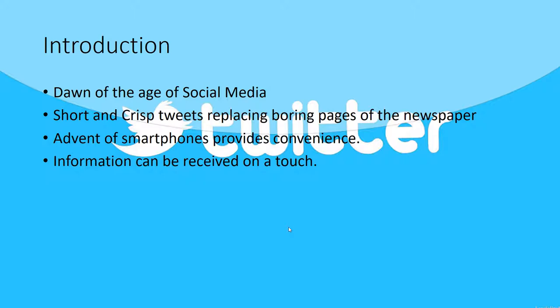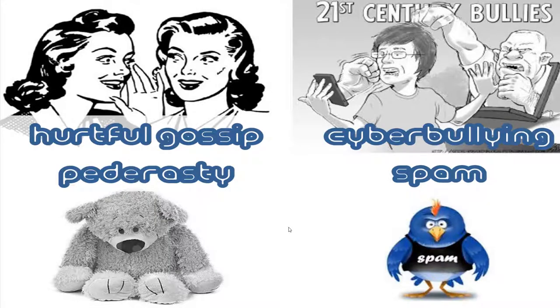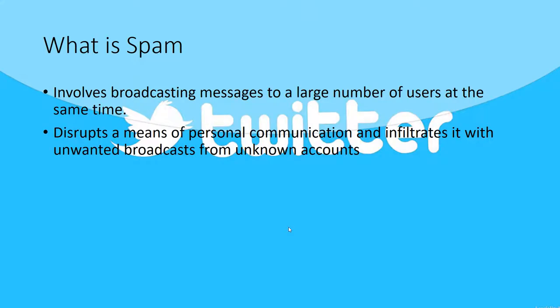But with any technology there are some disadvantages associated with it too. Hurtful gossip, cyberbullying, and spam are one of the most common forms of disadvantages of Twitter. In this project I am going to be focusing on detection of spam in Twitter. So what is spam? Spam involves broadcasting messages to a large number of users at the same time, which forces people to look at information they have no interest in and thereby decreases the user experience.